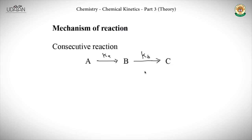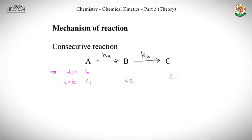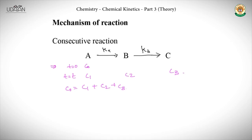Now that we have studied zero order and first order reactions, let's study a special type called a series reaction, because these reactions are in series — also called consecutive reactions. Compound A goes to compound B through rate constant Ka, and compound B goes to compound C through rate constant Kb. At time T equal to zero, concentration of A is C0. At any time T, concentration of A is C1, B is C2, and C is C3. Therefore C0 equals C1 plus C2 plus C3.